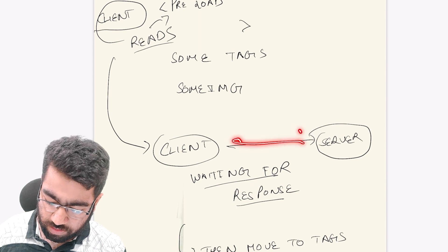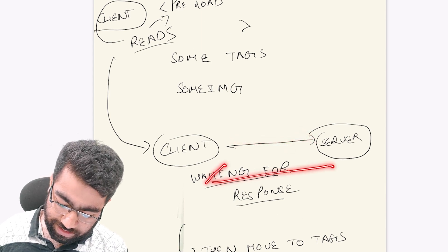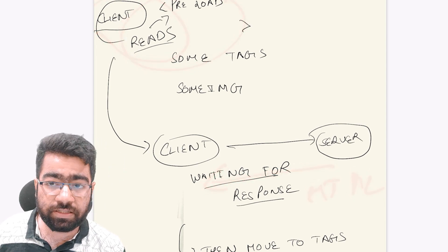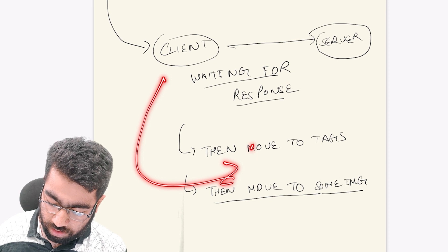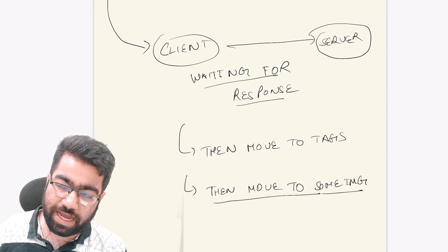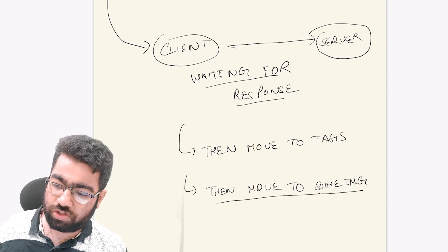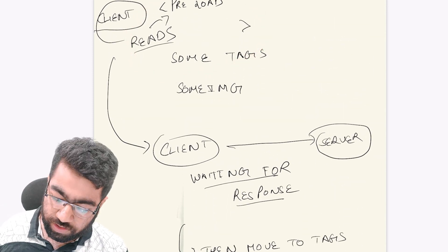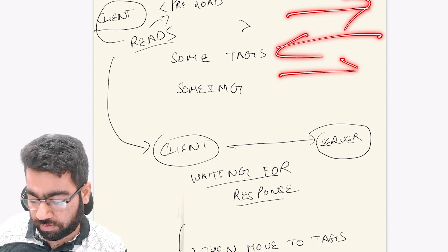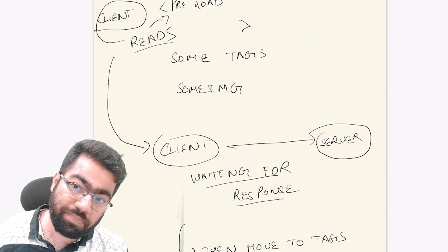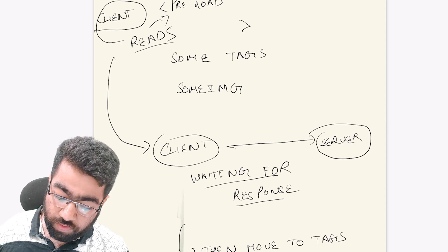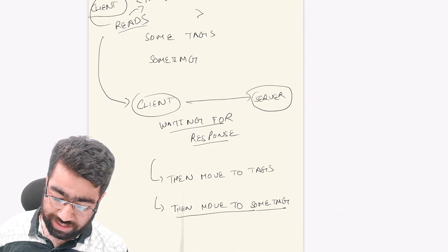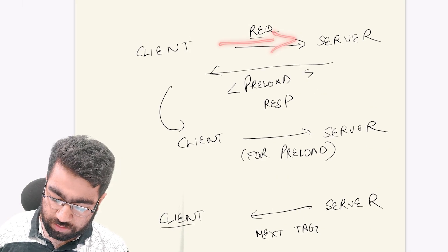How will this chunking reduce our time? In the normal scenario, the client makes a call to the server, gets the HTML, and in it there are some preload tags. The client starts reading these preload tags and then again makes a call to the server to process those tags — it does not read forward. For each thing that has to be processed, it is again making a call to the server, involving a lot of back-and-forth round trips and time delay. What we want is to push the data without the client having to ask for it.